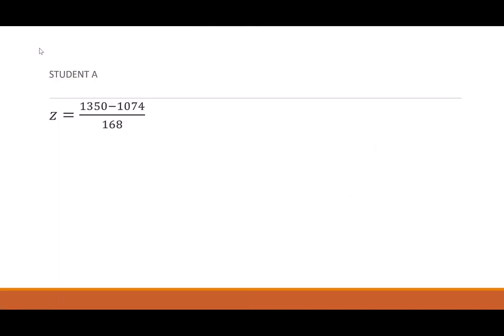So let's look at student A. Student A made a 1,350. The mean was 1,074. The standard deviation was 168. So when we convert that, we get a z-score of 1.643. So this student was 1.643 standard deviations above the mean.